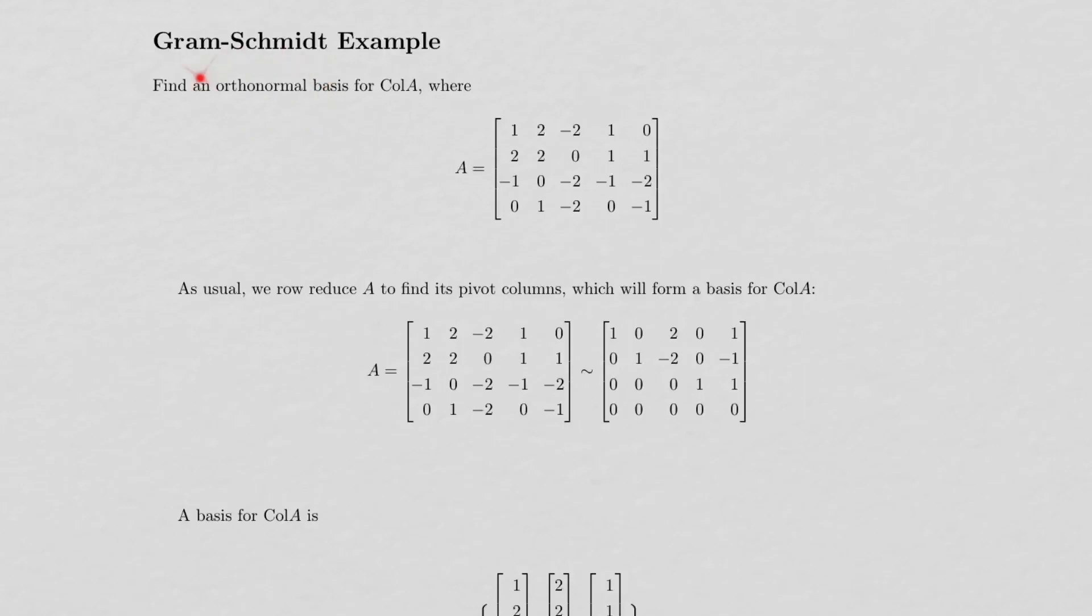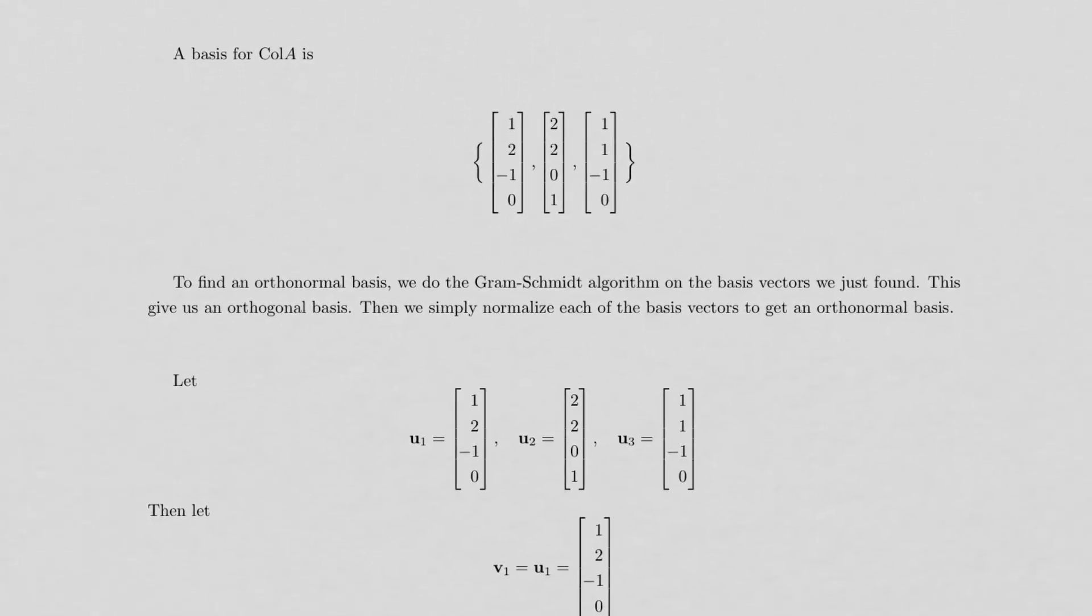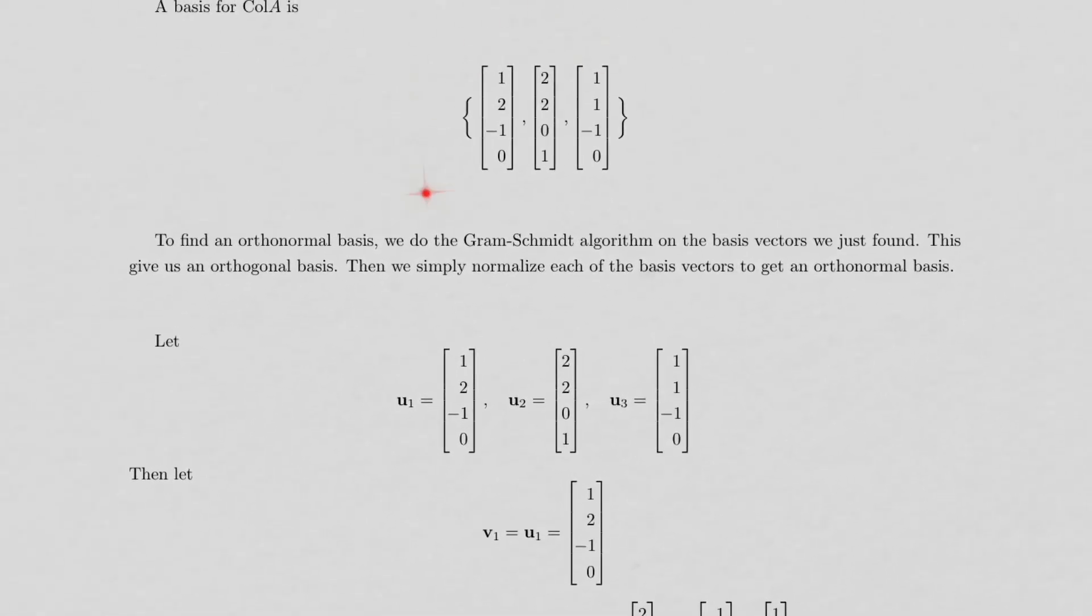But I want an orthonormal basis. So an orthonormal set is a set that is orthogonal and unit vectors. The normal part there means unit vectors. So what we need to do is take this set and orthogonalize it, and we'll use the Gram-Schmidt process for that.